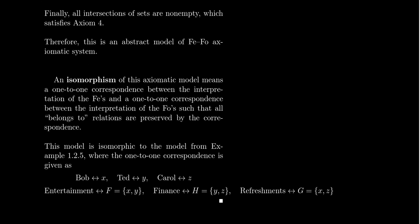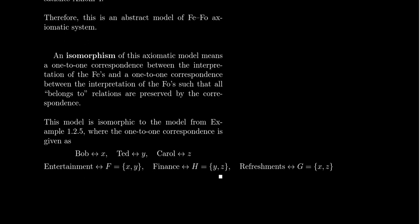So I want to jump here to the bottom. An isomorphism is going to be this one-to-one correspondence between them. So for us here, we need a correspondence between the fees and a correspondence between the foes. So given the first model we did in the previous video and the model we have presently, we're going to identify Bob with X, Ted with Y, and Carol with Z.